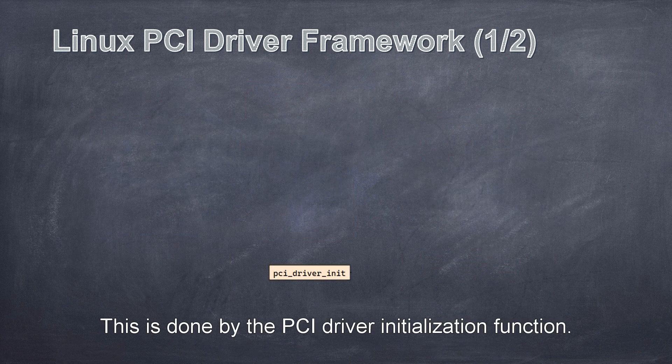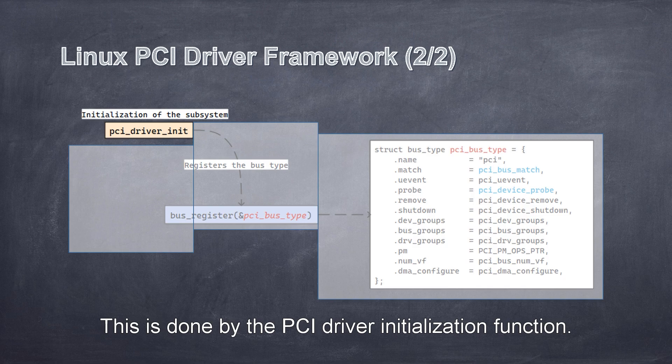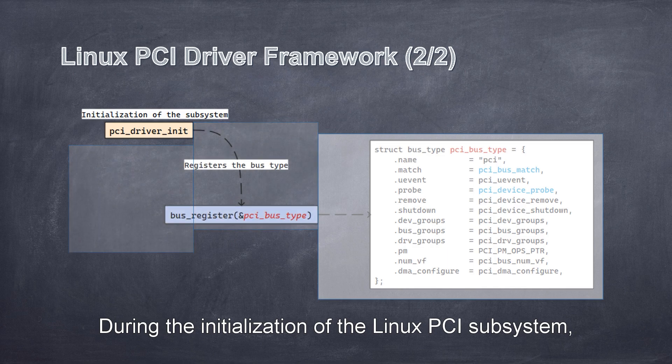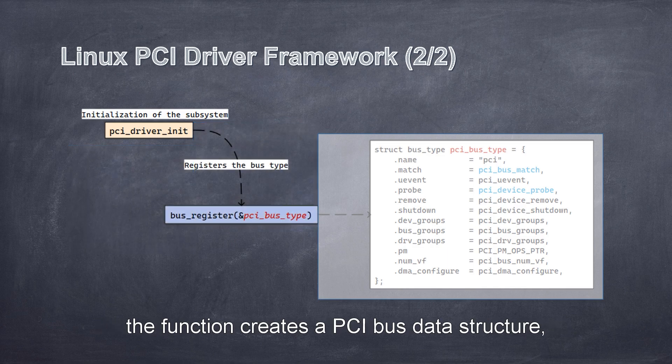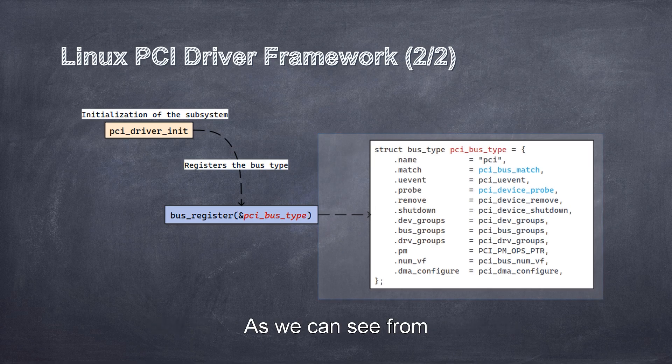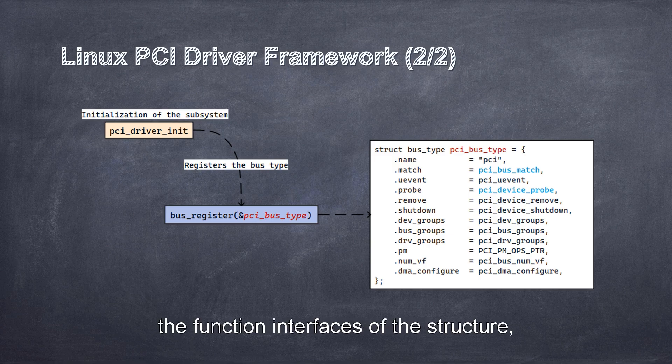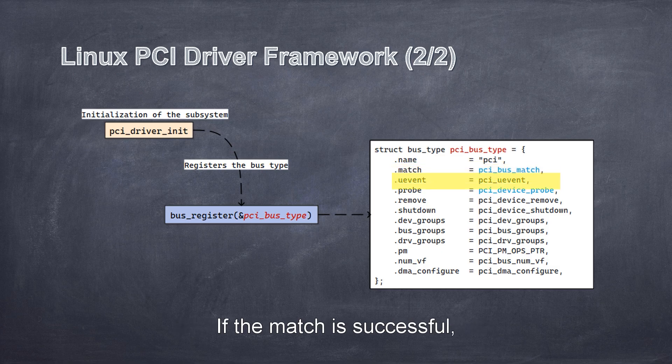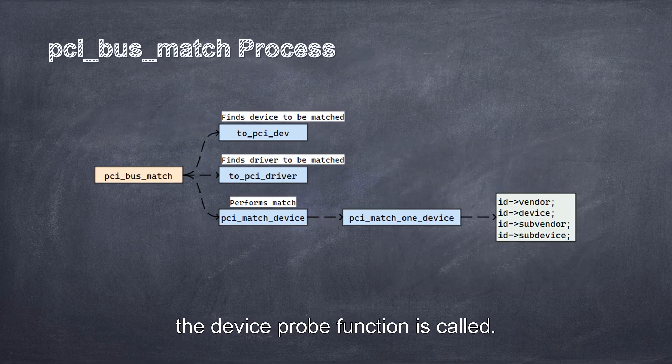According to the framework, the first step is to create a PCI bus in the kernel so that the PCI devices and drivers can be connected. This is done by the PCI driver initialization function. During the initialization of the Linux PCI subsystem, the function creates a PCI bus data structure, that is, the pci_bus_type global variable. As we can see from the function interfaces of the structure, the match function matches the device with the driver. If the match is successful, the device probe function is called.